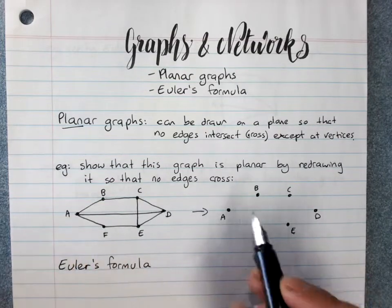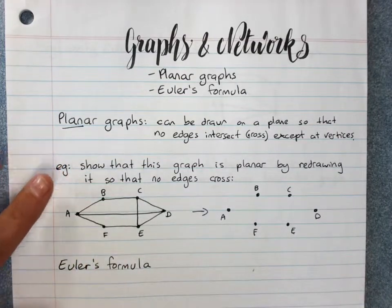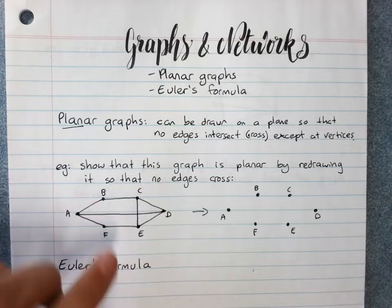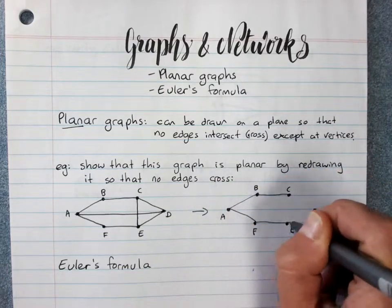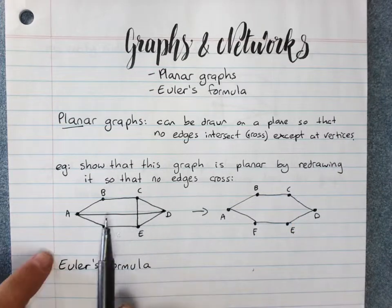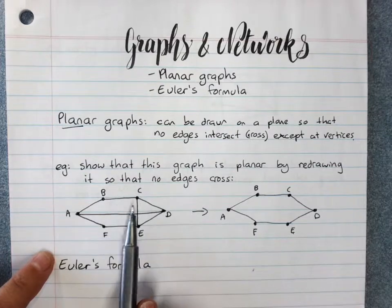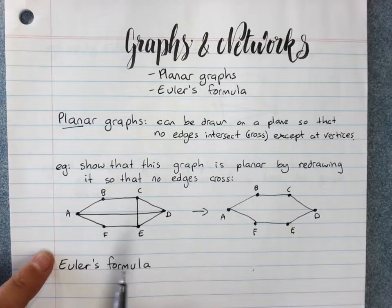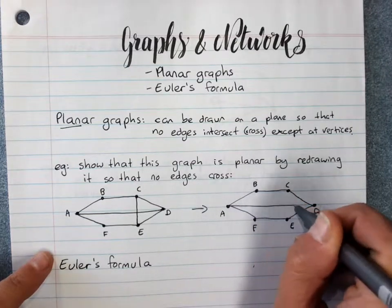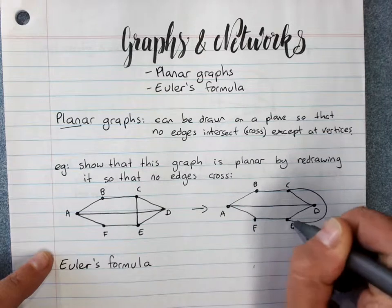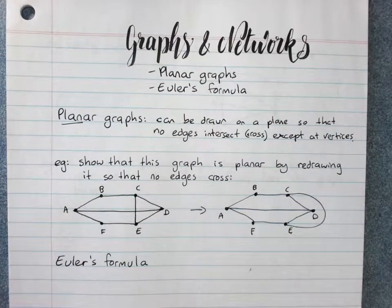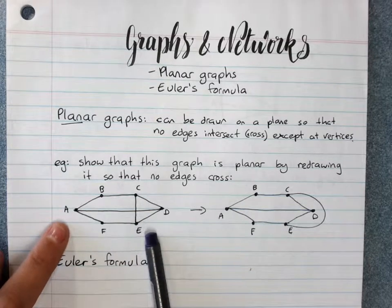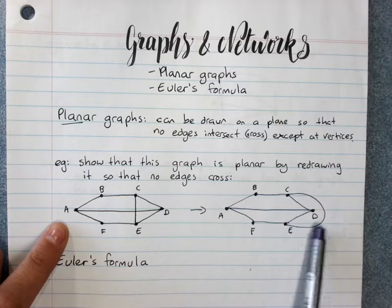So if we are asked to show the graph is planar, redraw it. Any edges that aren't problematic we can just pop them in, and then we've got two choices here: A to D could move or C to E could move. It doesn't really matter, we'll keep A to D and move C to E. Now you will at times get graphs that are just so intertwined that you can't draw them in an isomorphic form that's planar, and so they are non-planar graphs. This is a planar graph. To prove it you'd redraw it demonstrating that it's planar.